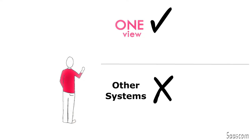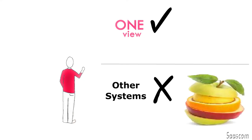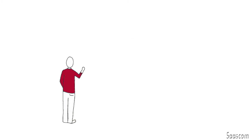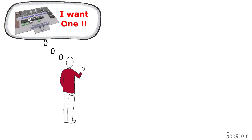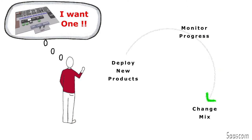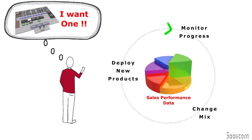Because unlike the other products, which provided parts of a solution, OneView was one complete, totally integrated sales platform. He now knew a sales platform was what he wanted, because he could use it to deploy new products quickly, monitor their progress, and change the marketing mix based on real sales performance evidence.